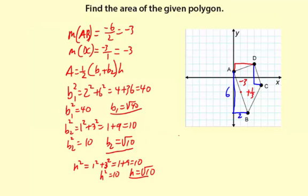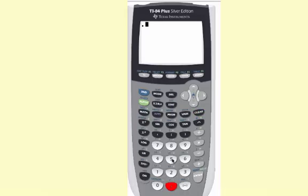OK, now we can use the formula. 1 half and B1 was square root 40, plus B2 which is square root 10, and then times the height which is also square root 10. And I'm going to use a calculator for this.